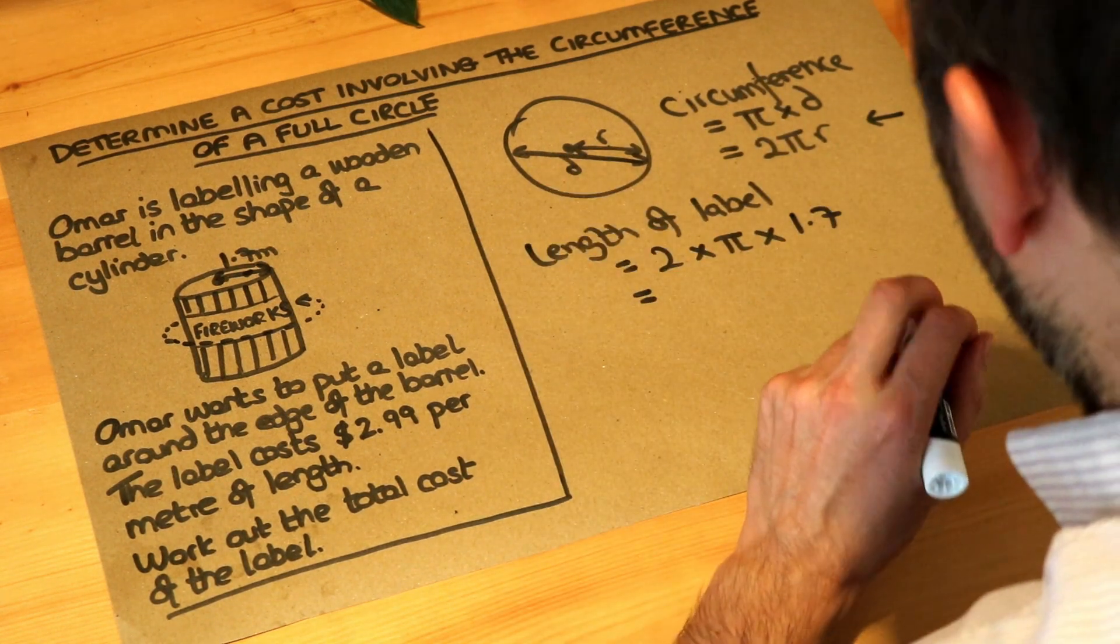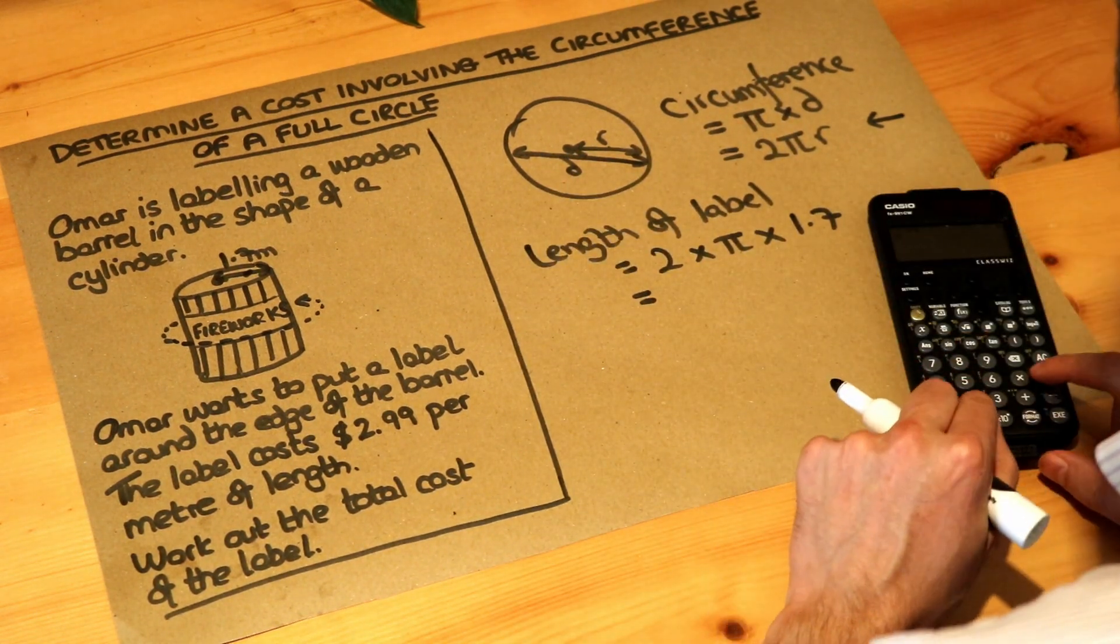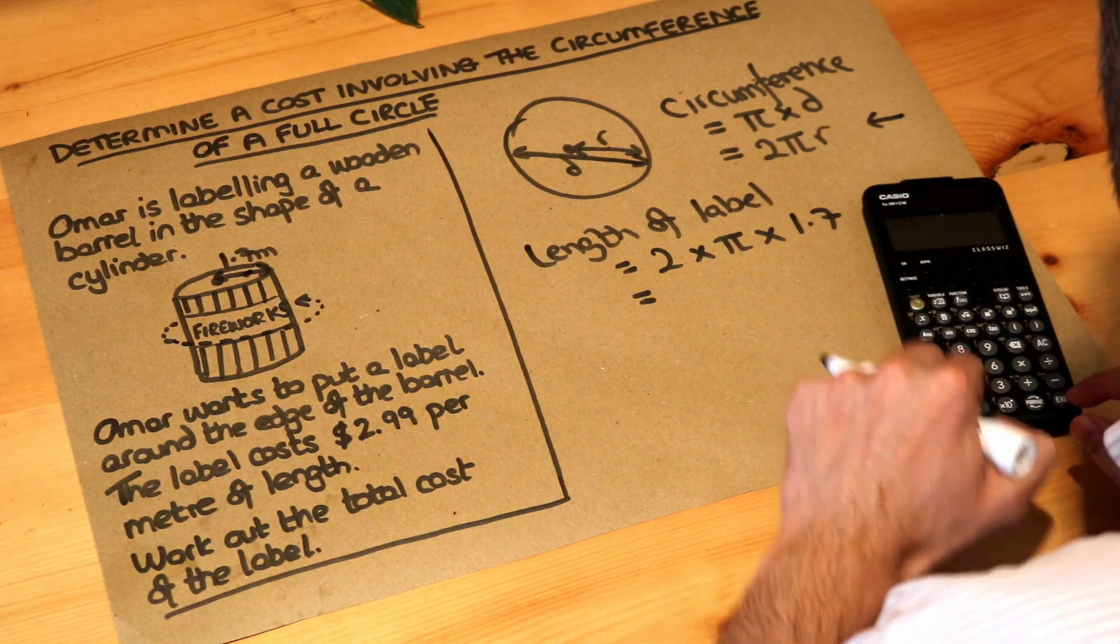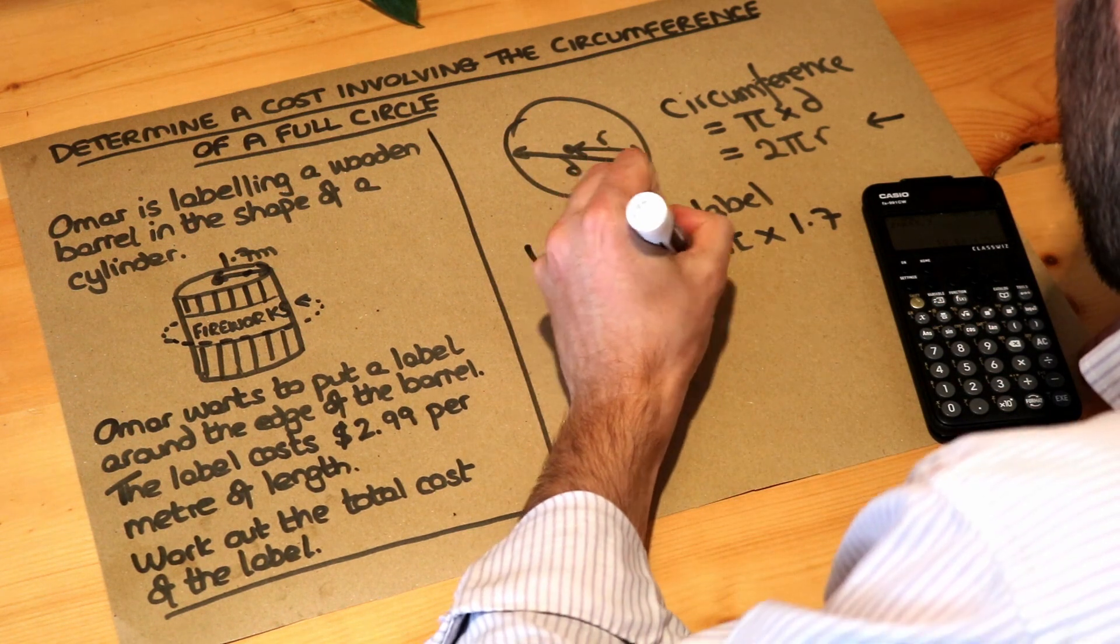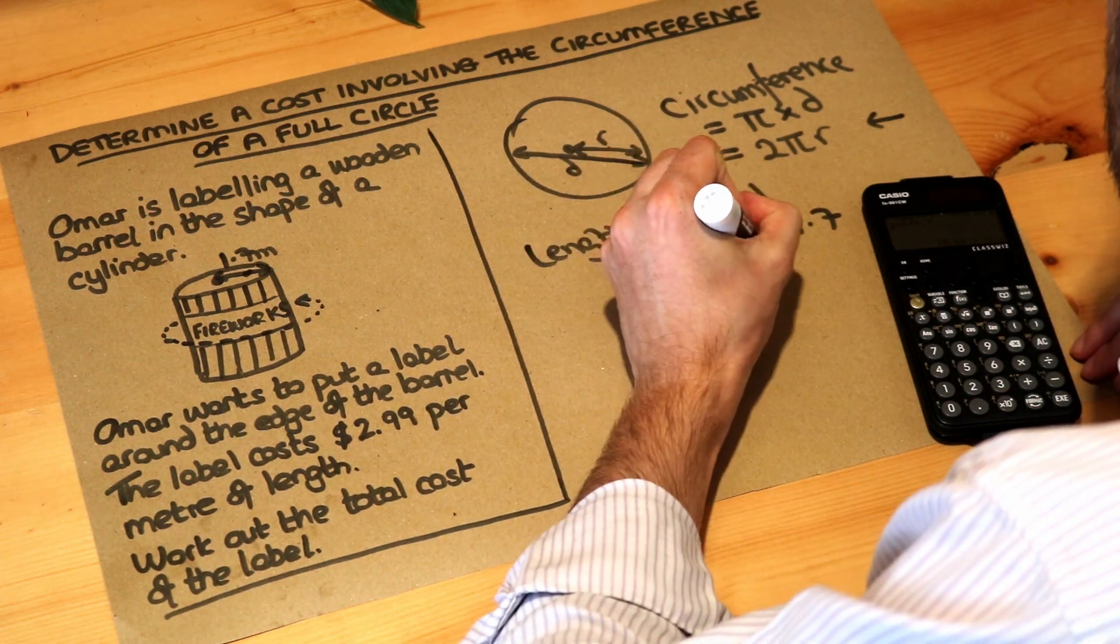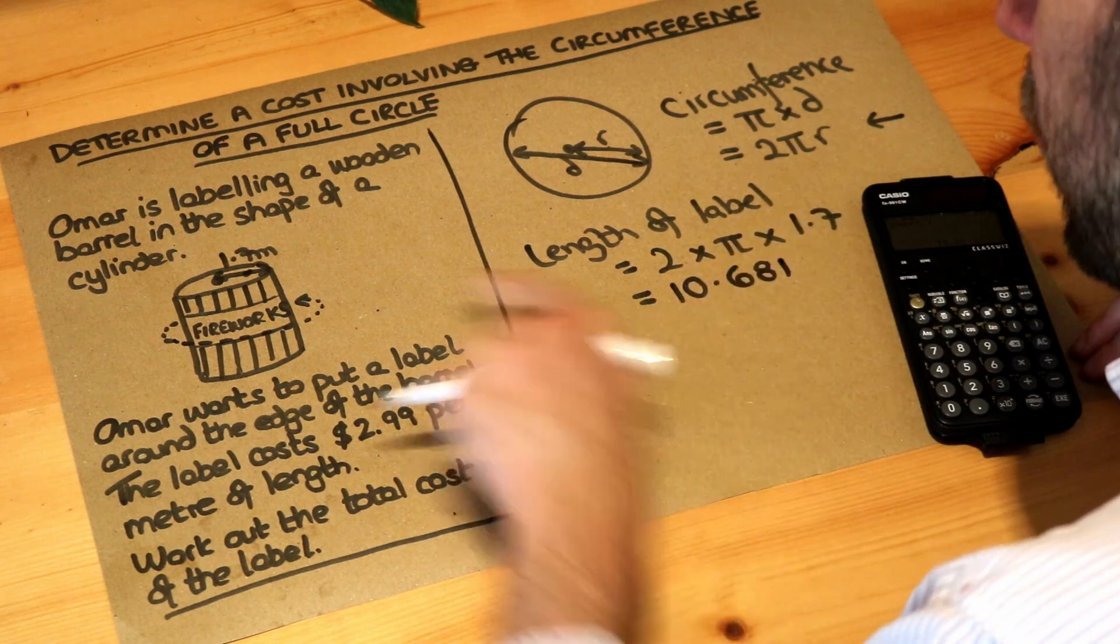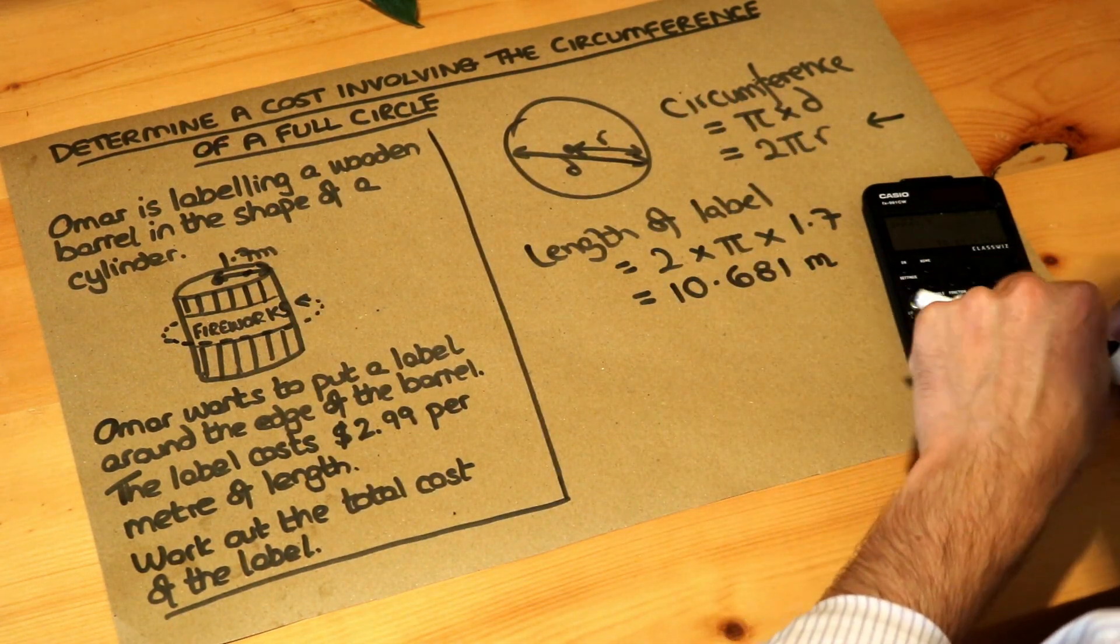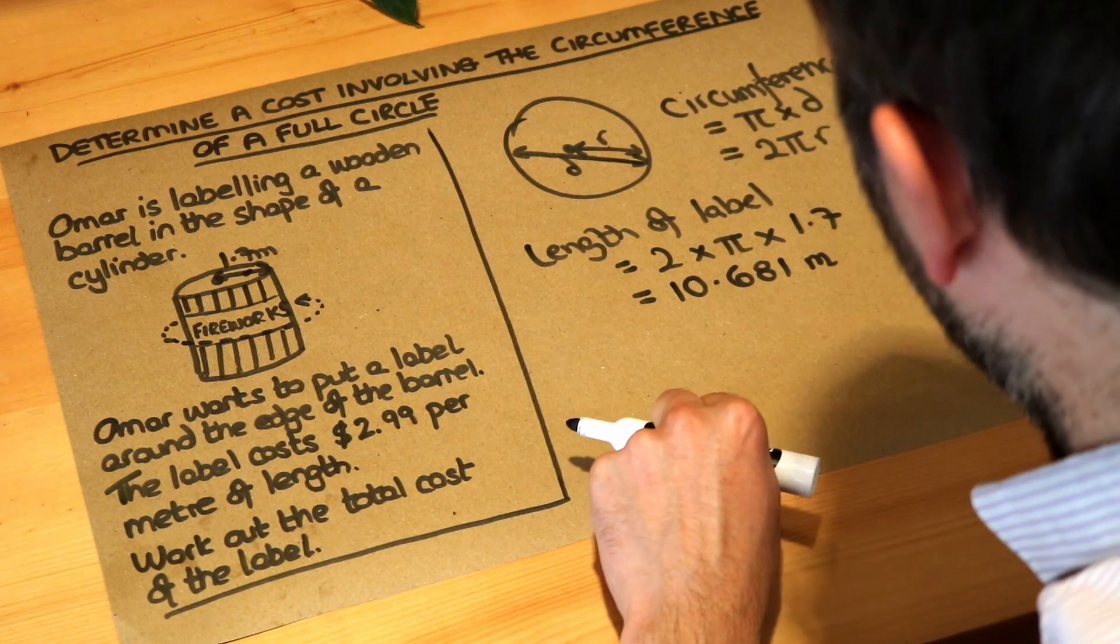Now if I do that on my calculator, so 2 times shift π times 1.7, it's 10.681 and what's the unit? Metres. You may have to press the SD key to convert it to a decimal or something like that.